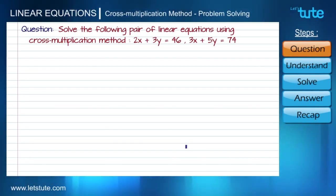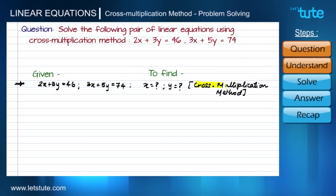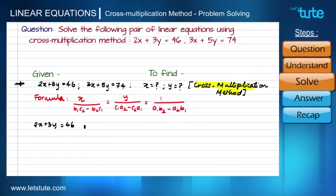We are going to solve this question using particular steps. First of all, we will understand this question. We are given two equations and we have to find the values for x and y. We have to use cross multiplication method. We already know for solving pair of linear equations using cross multiplication method, we need to use the following formula.